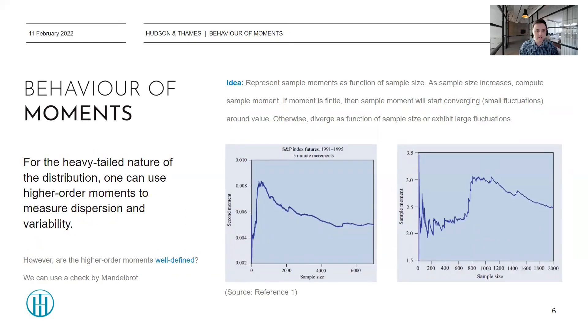Now, since the distributions are so heavy-tailed, we would still like to talk about dispersion and variability and make quantitative statements about it. To do this, we can use higher-order moments. But because of the heavy-tailed nature of these sample distributions, the question arises: are the higher-order moments well-defined? Well, there's actually a reasonably simple way to check this that was proposed by Mandelbrot.